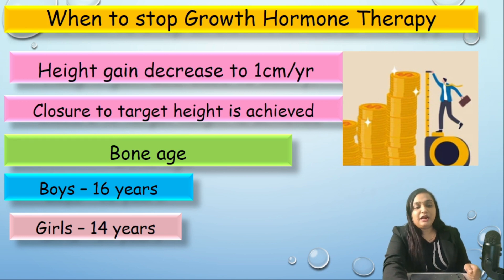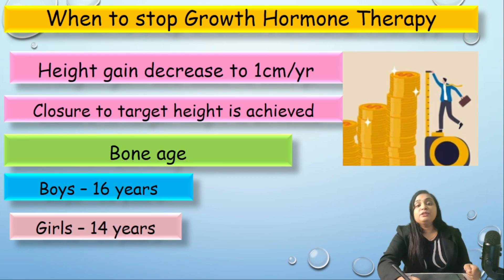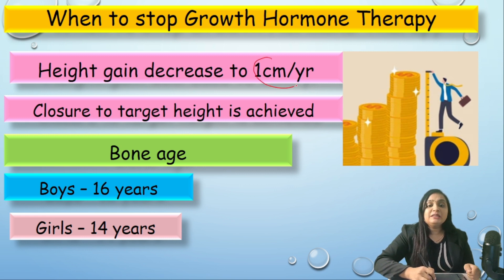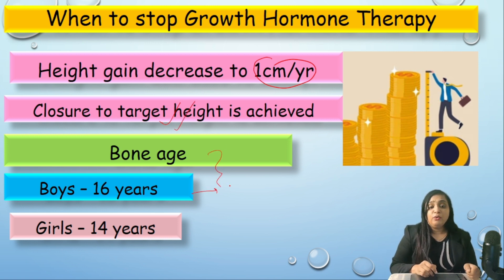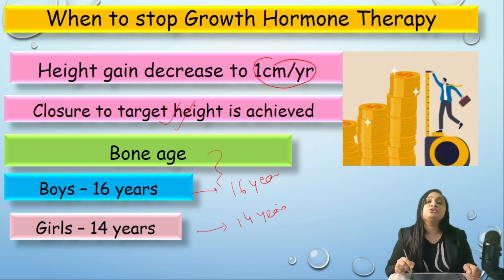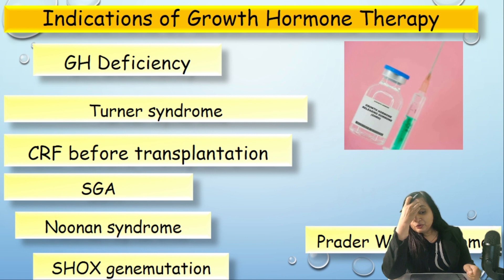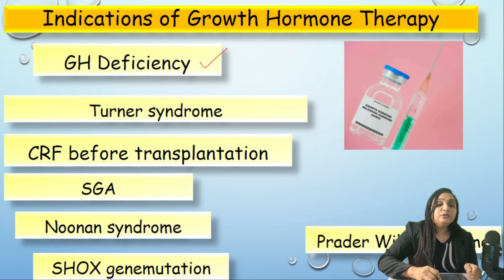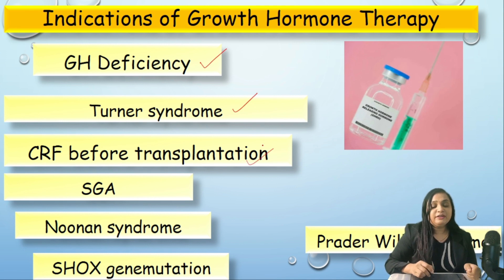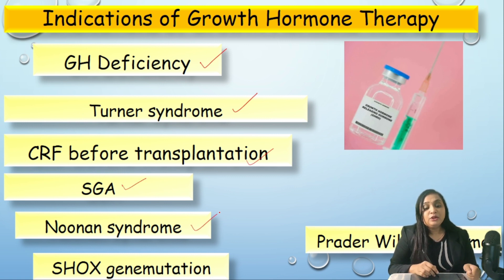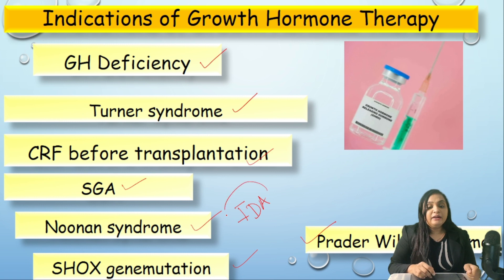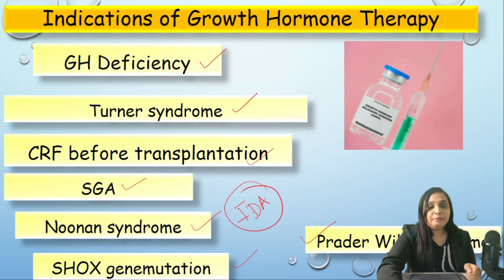When should we stop GH therapy? Stop when height gain decreases to less than 1 cm per year, the child is very close to target height, or bone age reaches 16 years in boys or 14 years in girls. Other FDA-approved indications for GH therapy include: GH deficiency, Turner syndrome, chronic renal failure (before transplantation), small for gestational age, Noonan syndrome, SHOX gene mutation, and Prader-Willi syndrome — eight conditions in total.